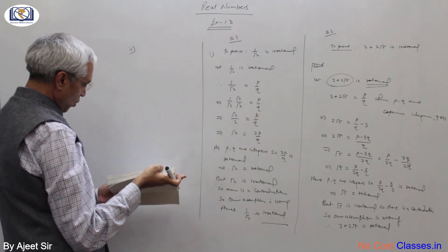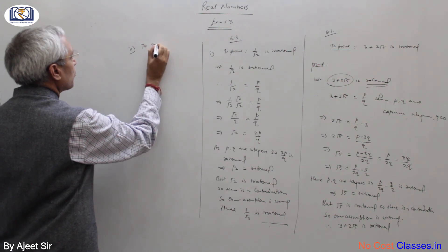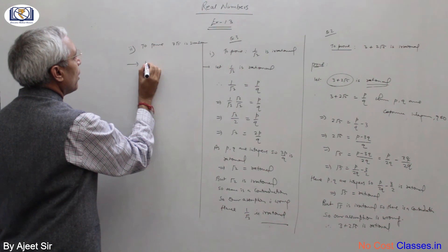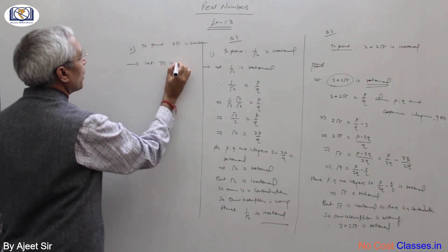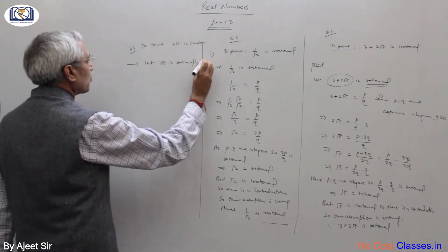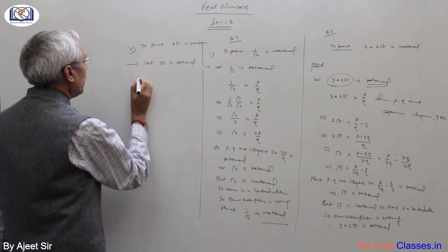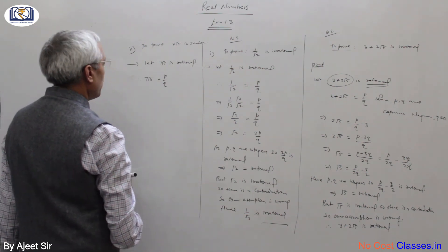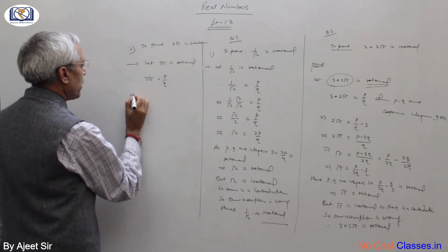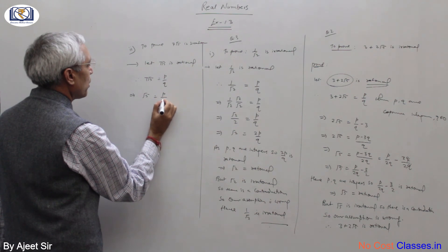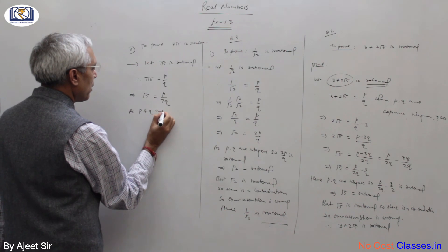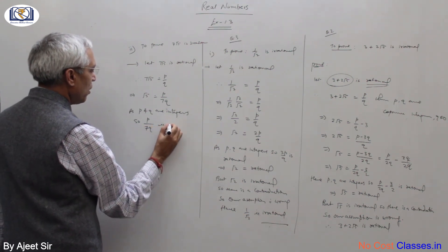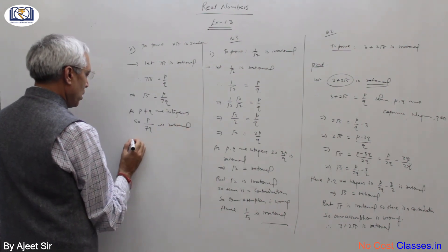Second part: prove that 7 root 5 is irrational. Let 7 root 5 be rational. This implies 7 root 5 equals p upon q where p and q are co-prime integers and q is not equal to 0. This implies root 5 equals p upon 7q. Since p and q are integers, p by 7q is rational.